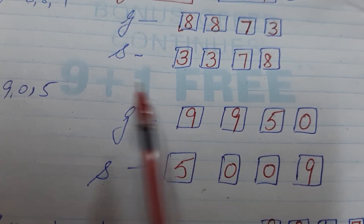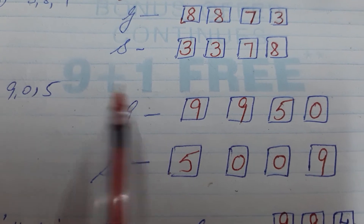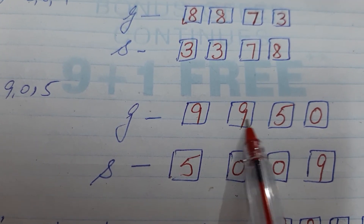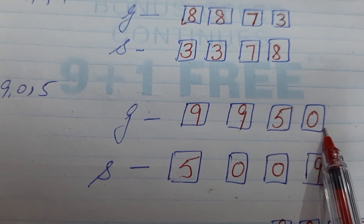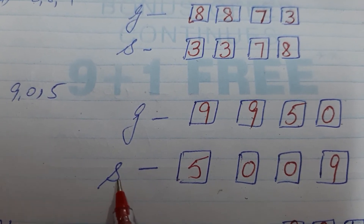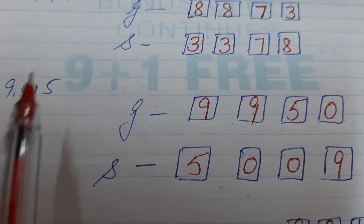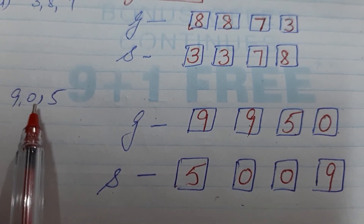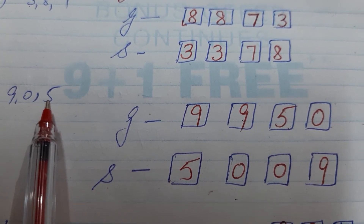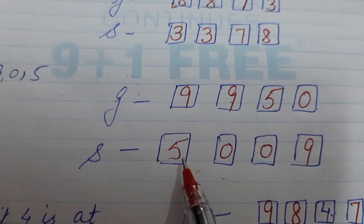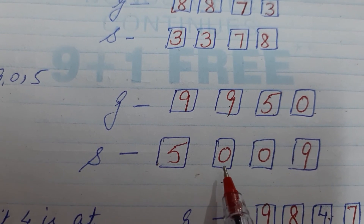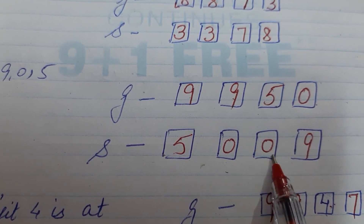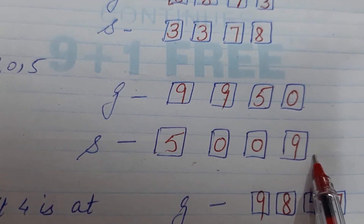Similarly, taking one more example: digits are 9, 0, and 5. For the greatest number, I will write 9 two times, then 5, then 0. So the greatest number is 9950. For the smallest number, we start with 5 because after 0, five is the next digit. Then I use 0 two times, giving us 5009.